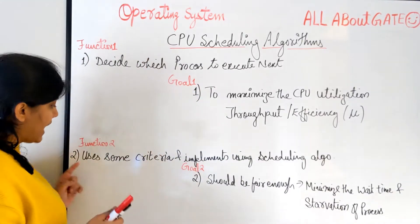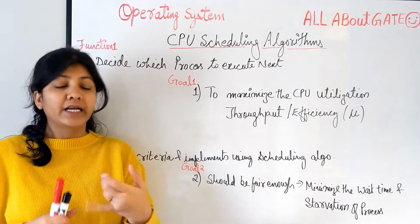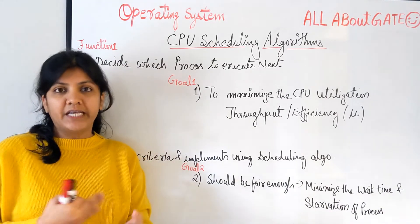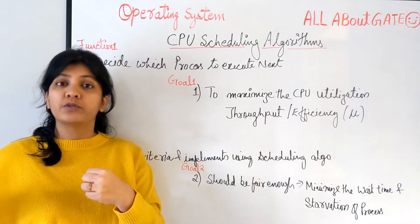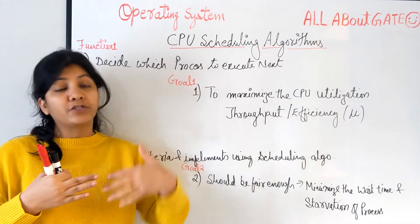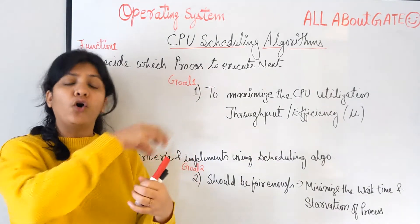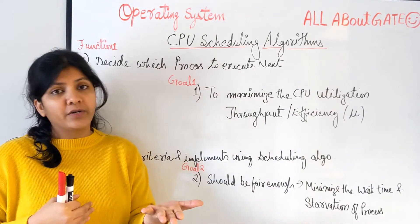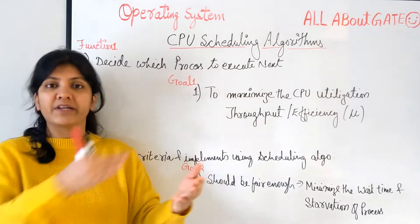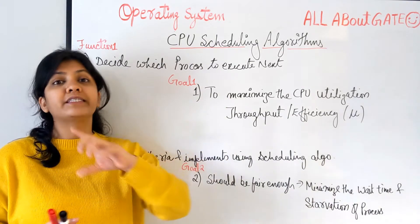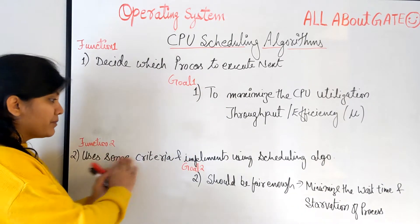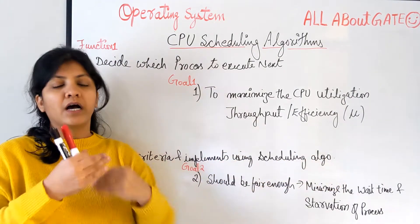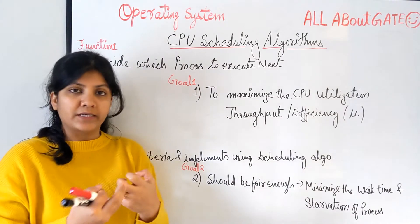The CPU scheduling algorithm takes that decision using certain criteria. For example, First Come First Serve — whoever arrives first in the ready queue gets to execute first. Shortest Job First — whichever process is shortest gets the chance first. Priority Scheduling — the highest priority process goes first. These are all criteria that we implement with the help of scheduling algorithms.